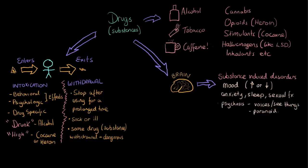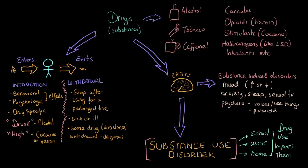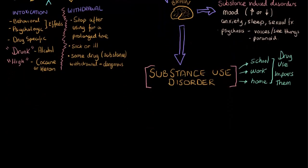When these drugs affect the brain, something completely different may also happen — we can have the development of a substance use disorder. Not everybody who uses a substance develops a substance use disorder. It basically implies that the way they're using the drug is causing them a real degree of impairment, really affecting the way they function in their life, whether that's at school, work, or home. Not everybody that drinks alcohol, smokes cigarettes, or uses illicit substances has a substance use disorder, but some people do.